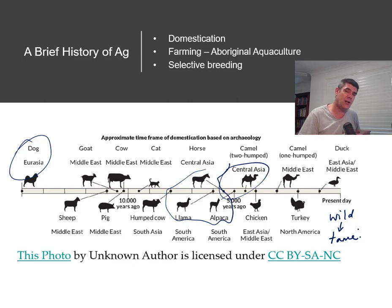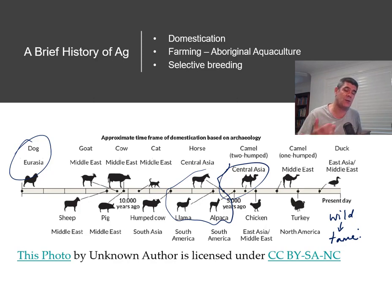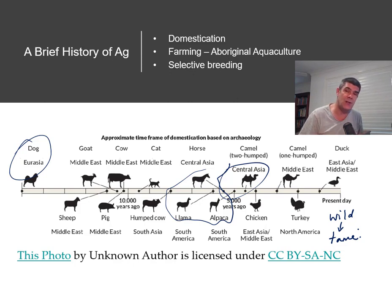That means trying to breed out the wildness and favour docility or tameness amongst our agricultural species. One of the other things we wanted to do is to increase population numbers, and we've actually changed the land in a lot of ways to accommodate the different types of organisms we use in our agricultural practices.